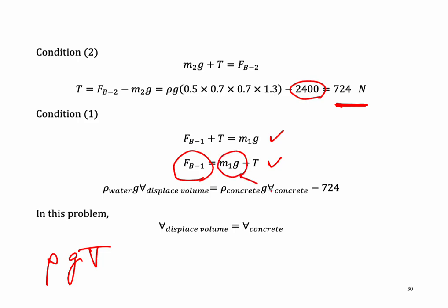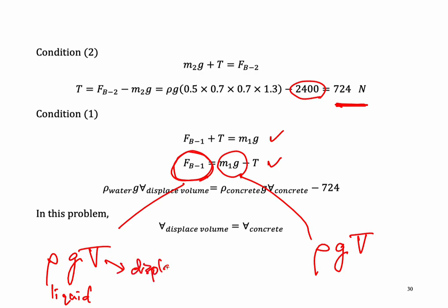To calculate the weight of the object, it is also rho, G, and volume. To calculate the force of buoyancy, you need to understand that the rho here is the rho for the fluid or liquid, and the volume is the displaced volume. For the weight, the rho times G is the density of the object — for example, if the object is steel, use the density of steel — and the volume is the total volume of the object, whether it is submerged in water or not.